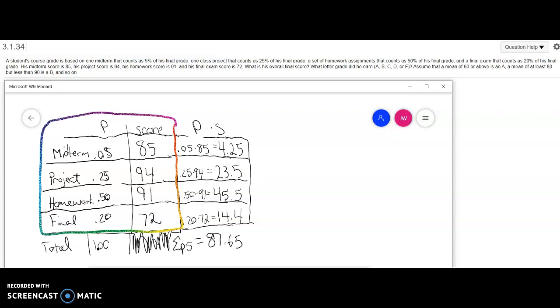The project was 25% of his grade, so I put 0.25 and he got a 94 on it. Homework was 50% of his grade and he got a 91 for his homework average. Final was 20% of the grade, so I wrote 0.20 and he got a 72 on his final.